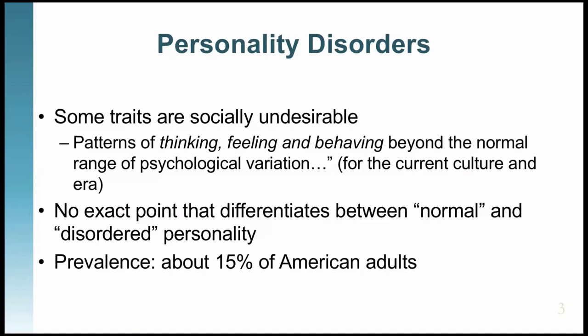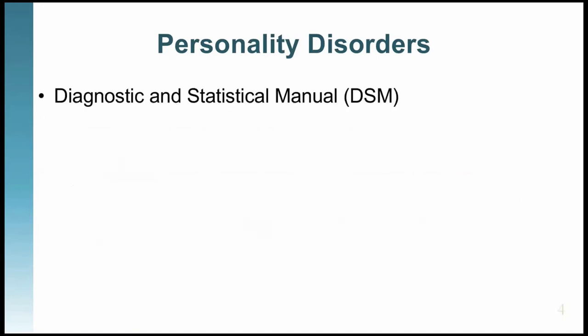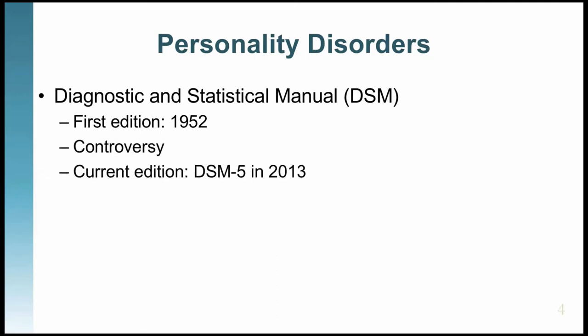Personality disorders became a diagnostic category with the publication of the first DSM — the Diagnostic and Statistical Manual — which came out in the 1950s. There have been many revisions since then. The current version is the DSM-5, published in 2013.